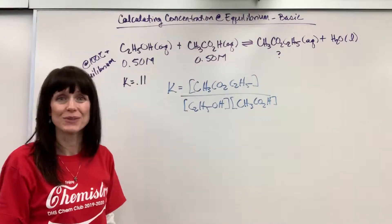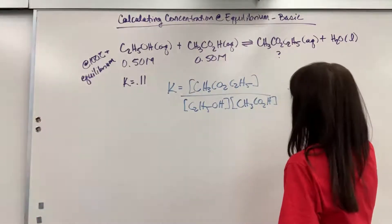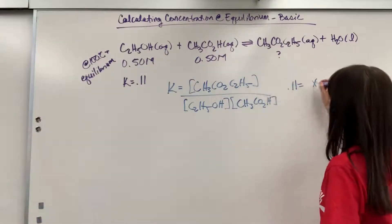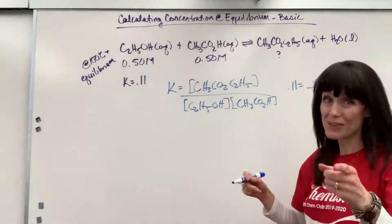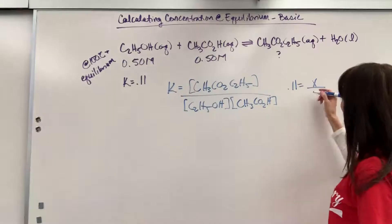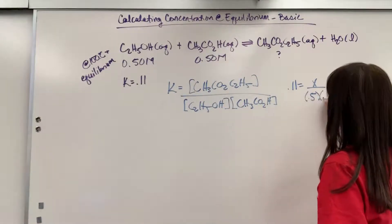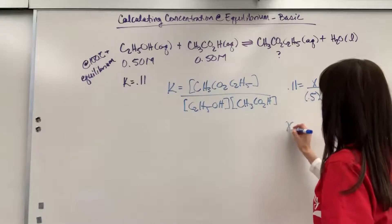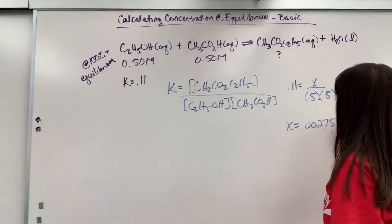Now it's plug and check with some algebra. The K value is 0.11 equals X, which is the unknown concentration of ethyl acetate at equilibrium. Then we have 0.5 times 0.5 in the denominator, and X equals 0.00275.